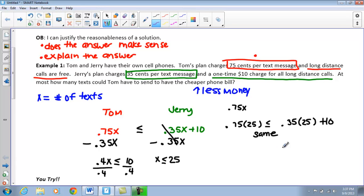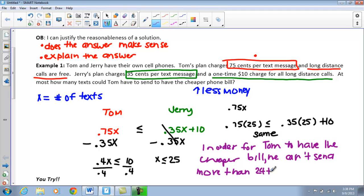In order for Tom to have the cheaper bill, he can't send more than 24 texts. If he does, then he'll end up spending more money than Jerry. Alright, this is our first example. We justified our solution. We said what this inequality means.